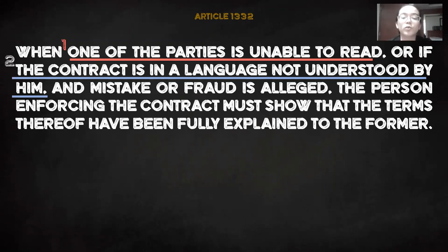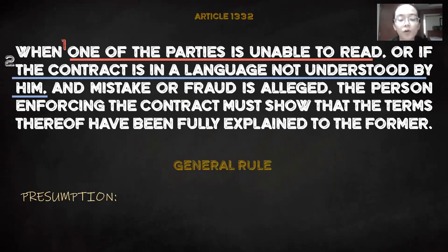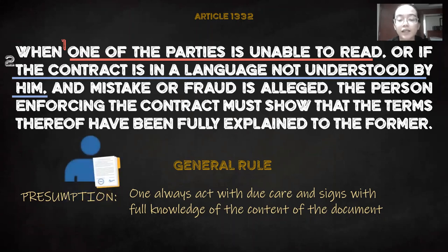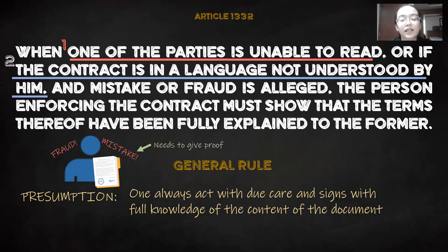Remember that there is a general rule. The assumption is that one always acts with due care and signs with full knowledge of the content of the document. So the person who signs it is therefore bound by all the terms. If later on he claims that there is a fraud or mistake, it is incumbent upon him to prove his allegation. Now, there is an exception to this rule, and this is where Article 1332 comes in.